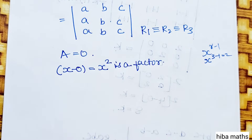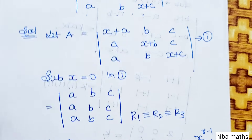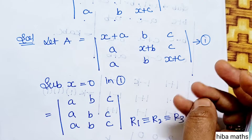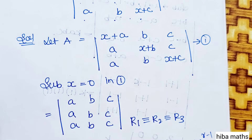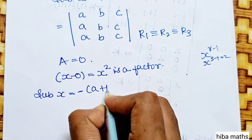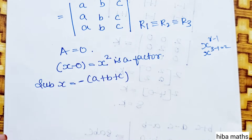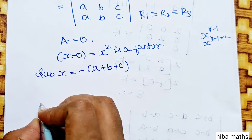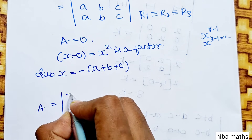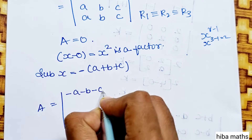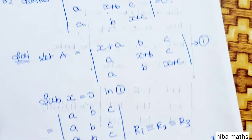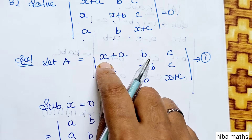The first factor is x squared. The other factor involves x equal to minus of A plus B plus C. This whole expression equals 0, so x is equal to minus A minus B minus C. Therefore, x plus a plus b plus c is also a factor.